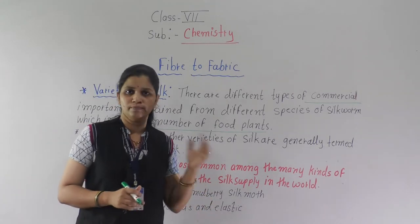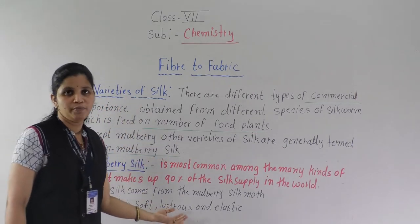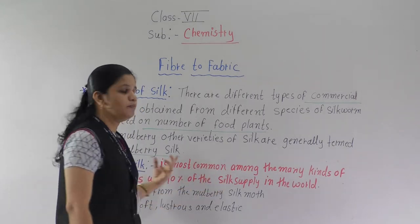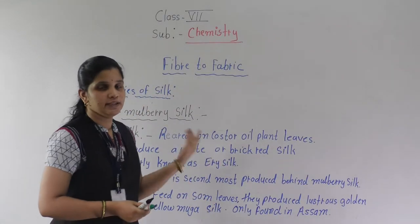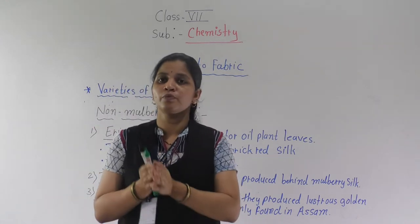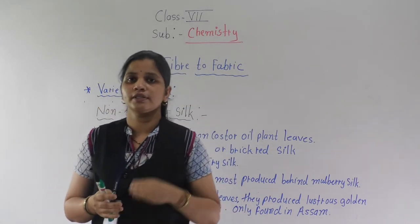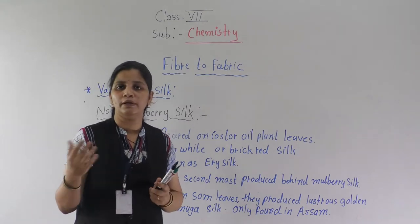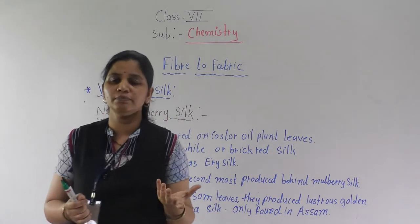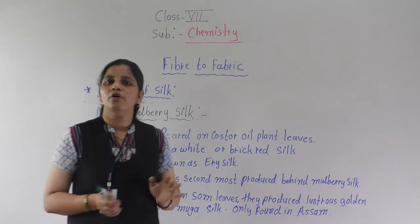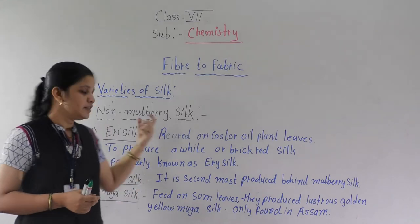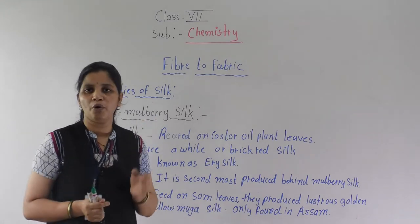Now we will learn about the non-mulberry silks. Mulberry silk is the most common and accounts for 90% of the world's silk supply — those silkworms feed on mulberry leaves. Non-mulberry silks come from moths that do not feed on mulberry leaves. There are three types of non-mulberry silk: eri silk, tassar silk, and muga silk.